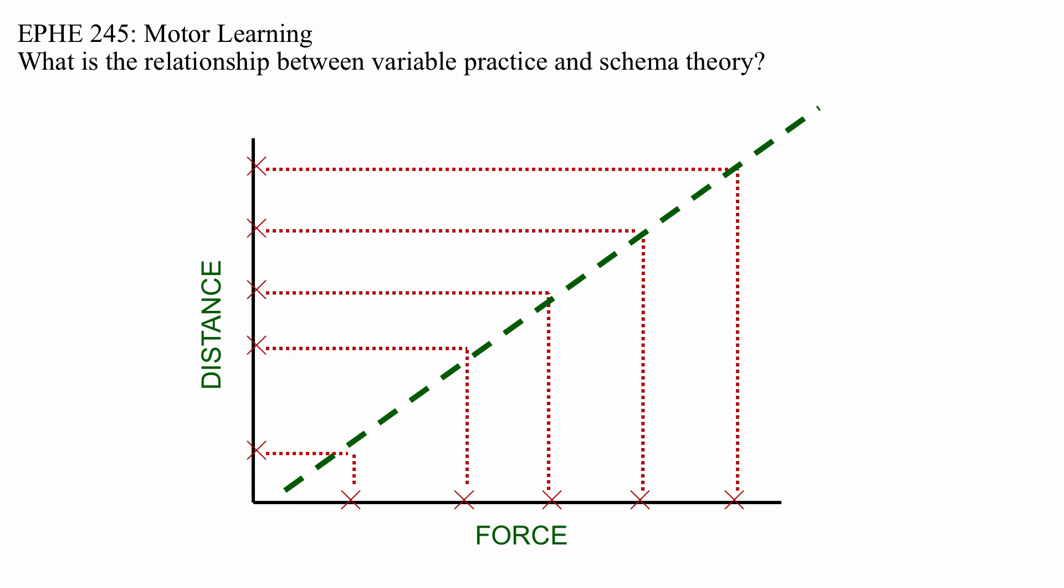Anyway, the idea here is simple. Variable practice develops a better schema, which means you're better able to perform a sports skill in a variety of contexts.